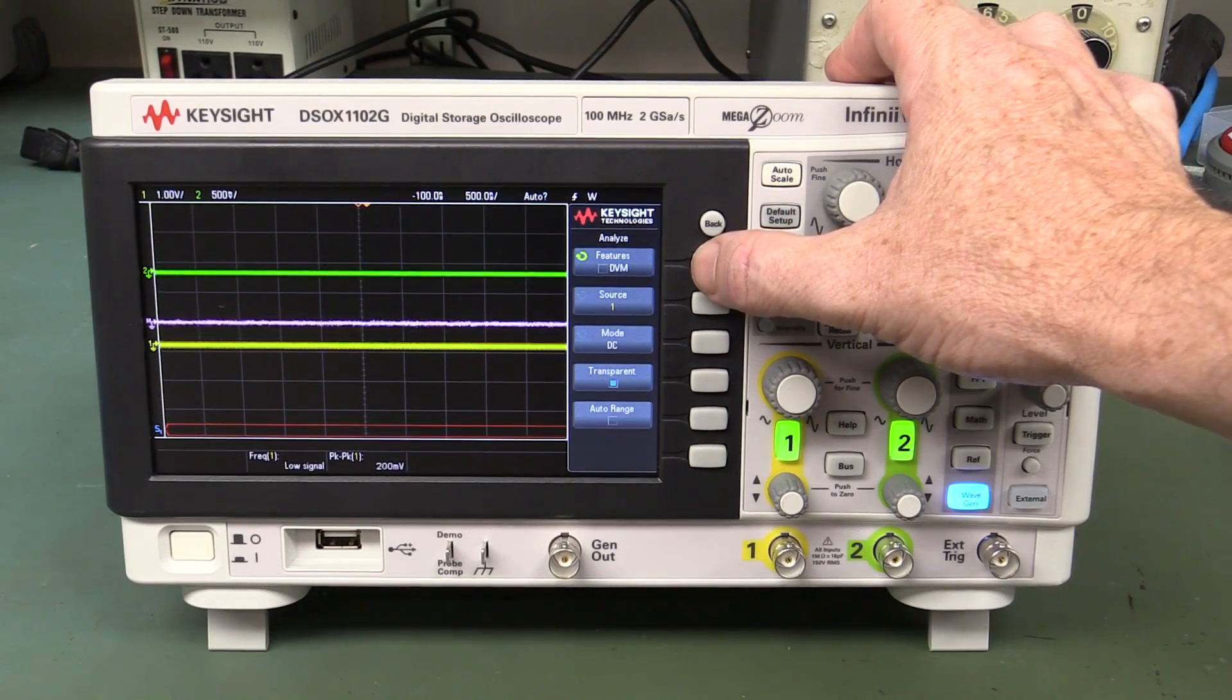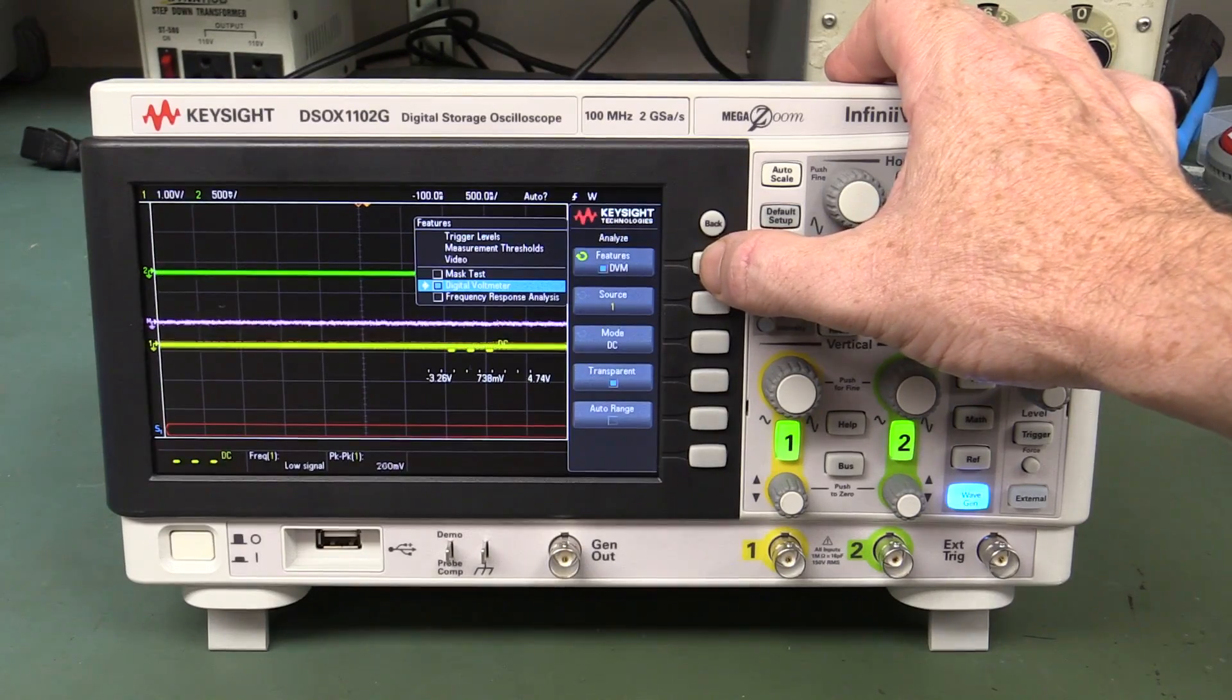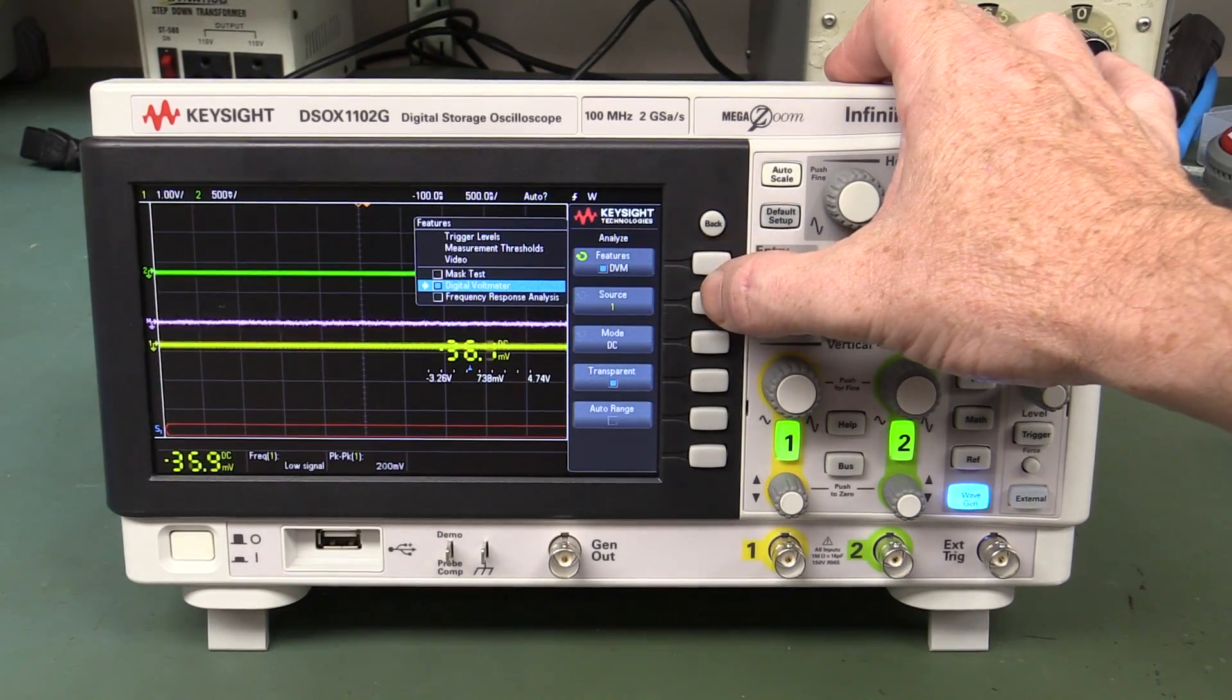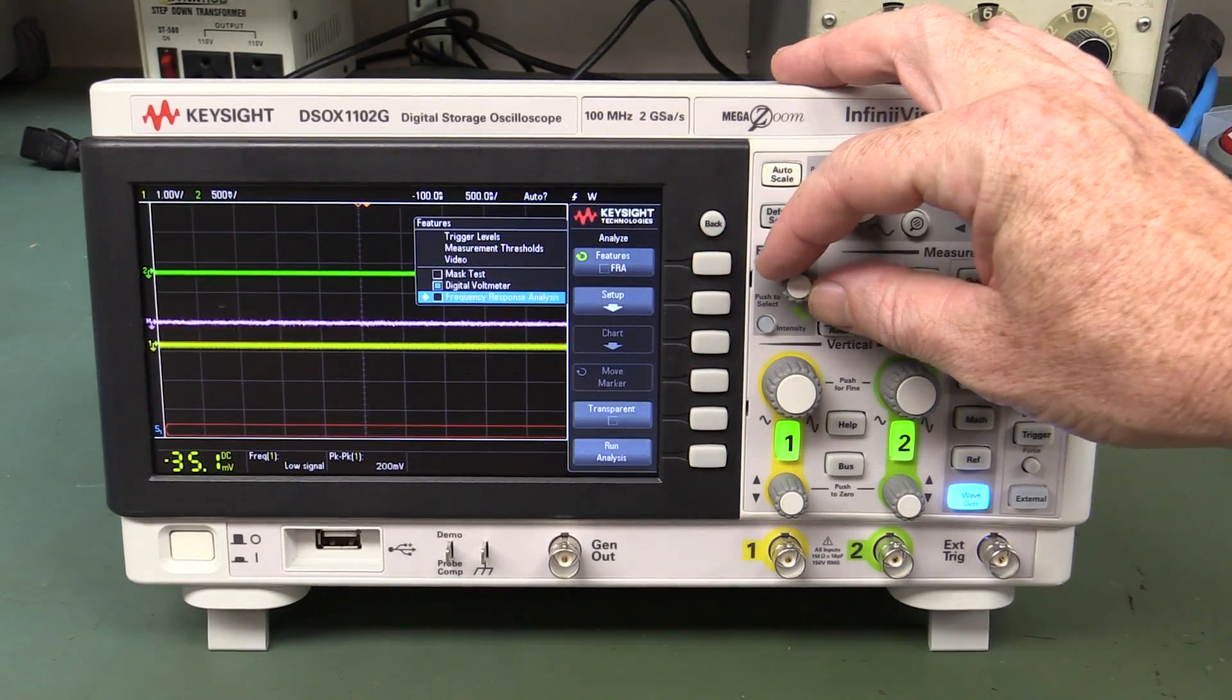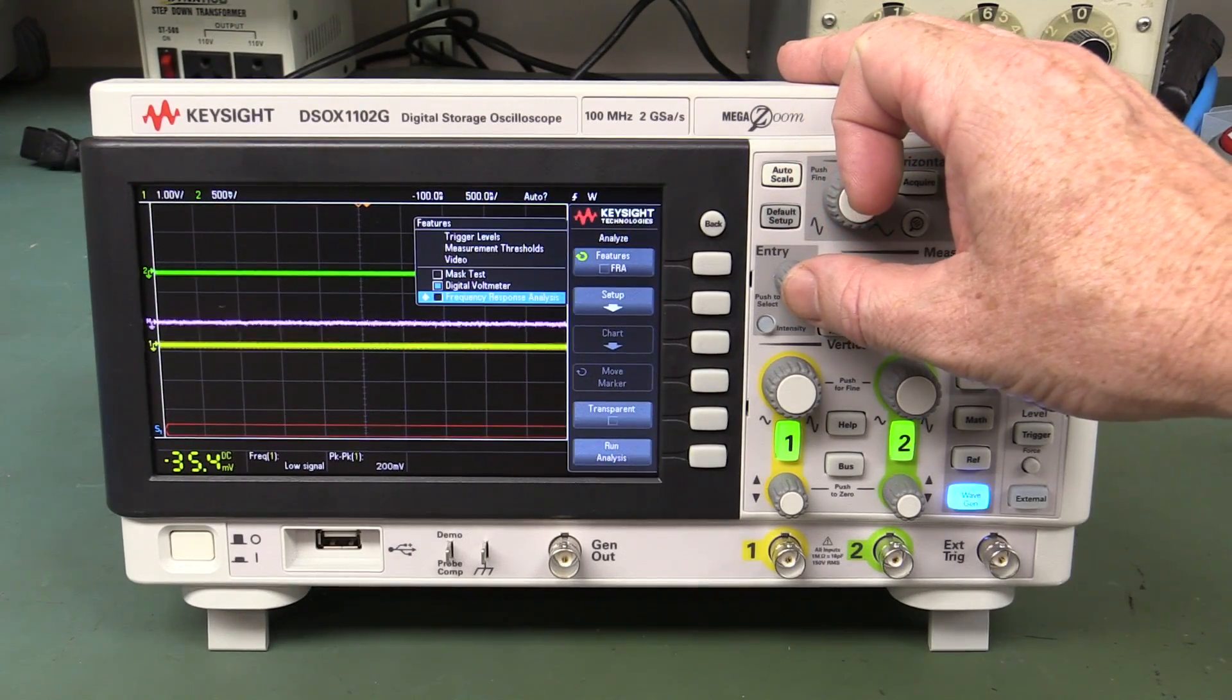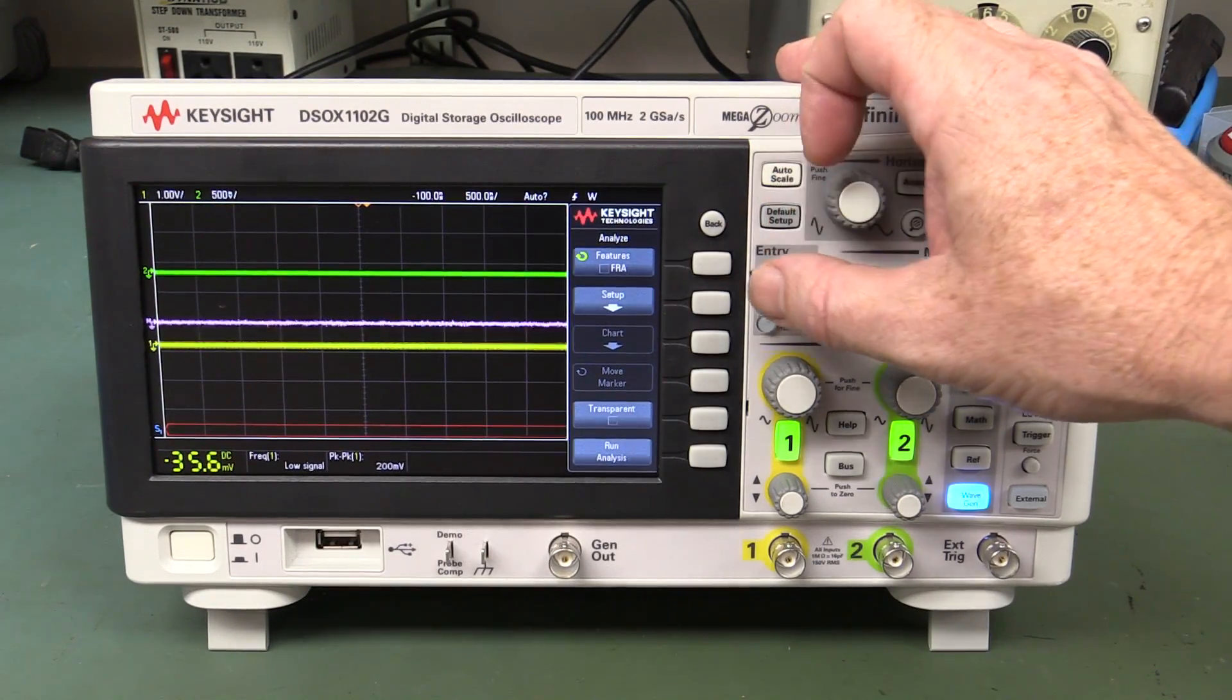Hang on, check this out. DVM. Okay, cool. We're gonna turn down our digital voltmeter. What's this? FRA. Frequency response analysis. Wow. Are you kidding me? Let's do that.